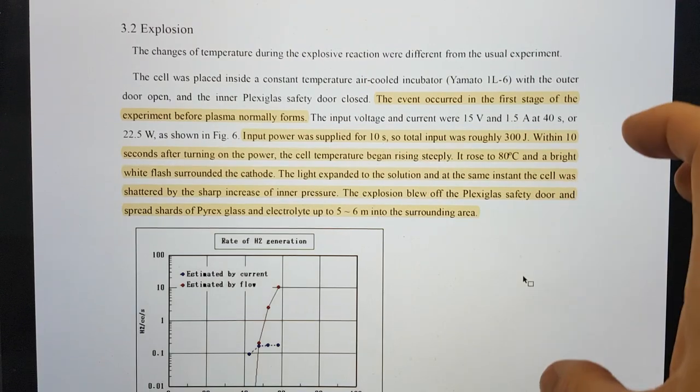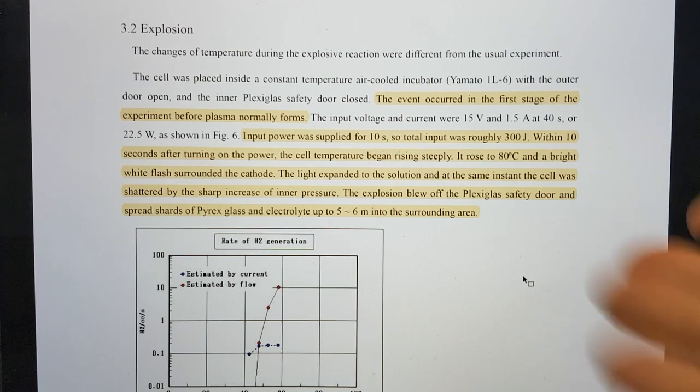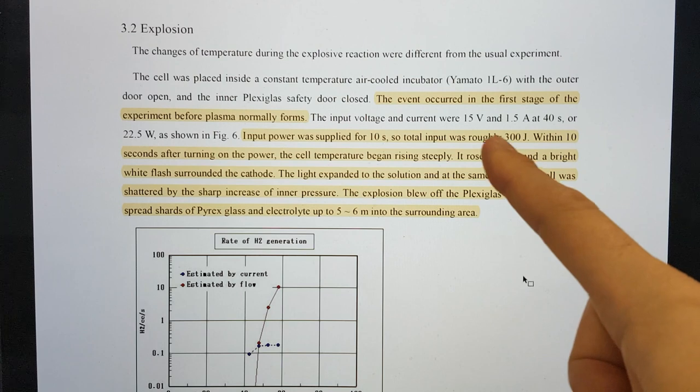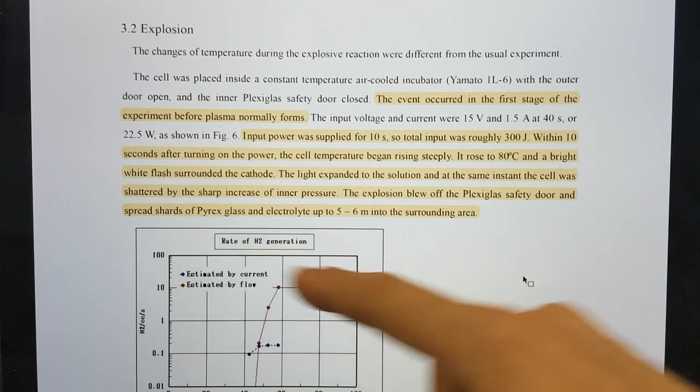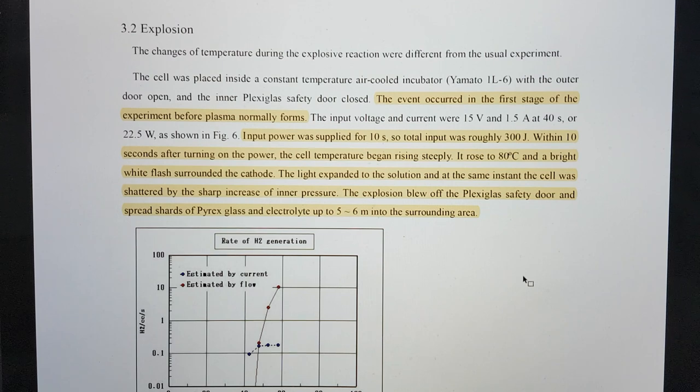The event occurred in the first stage of the experiment before plasma normally forms. They've done this experiment extreme numbers of times. The input voltage and current were 15 volts and 1.5 amps at 40 seconds or 22.5 watts. Input power was supplied for 10 seconds, so total input was roughly 300 joules.